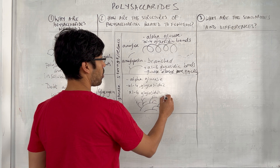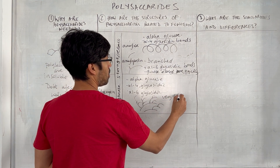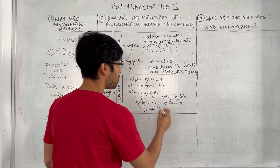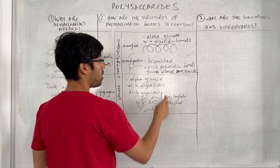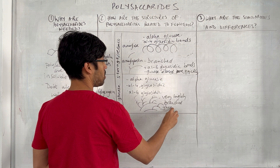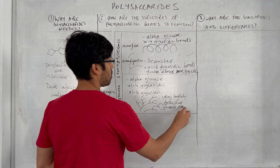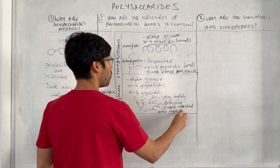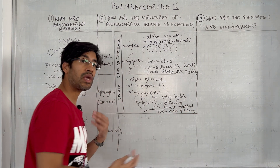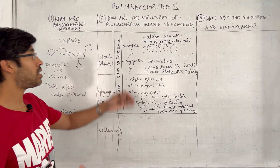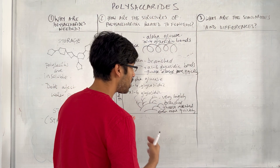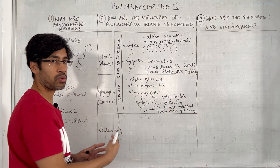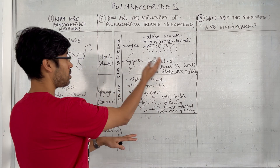Glycogen is very highly branched, so glucose can be released much more quickly — even faster than in amylopectin. Make sure you're clear about what you're saying and that you're making that contrast explicitly.